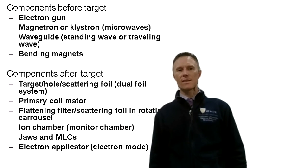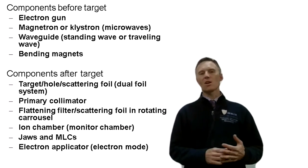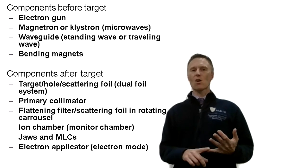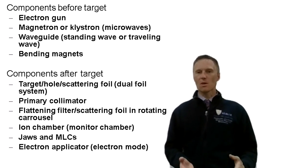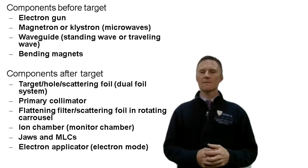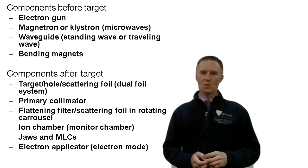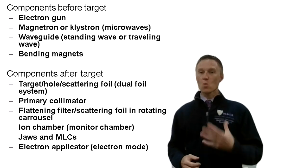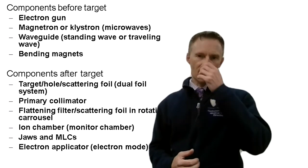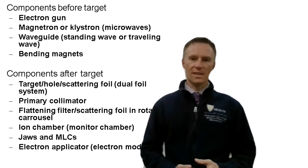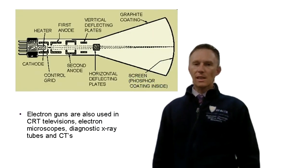Another component you'll need is the bending magnet. We'll also talk about scattering foils, flattening filters, ion chambers, mirrors inside the machine, and at the very end, when we've talked about all the components needed for a linear accelerator, there's one we haven't discussed yet — the klystron.